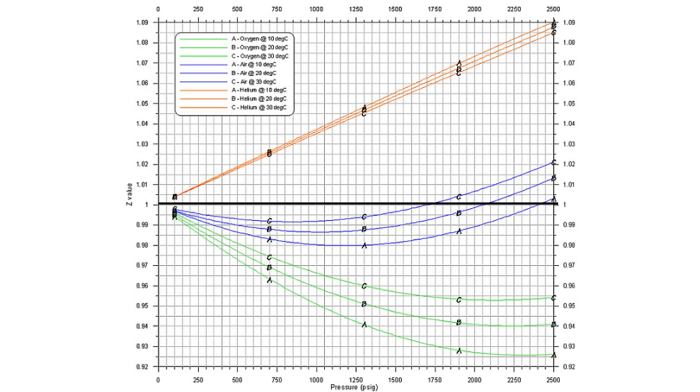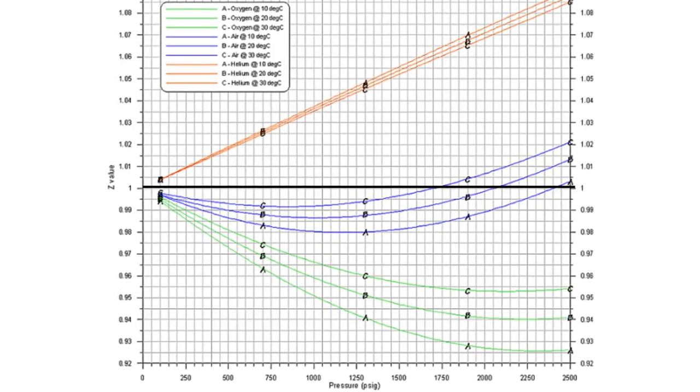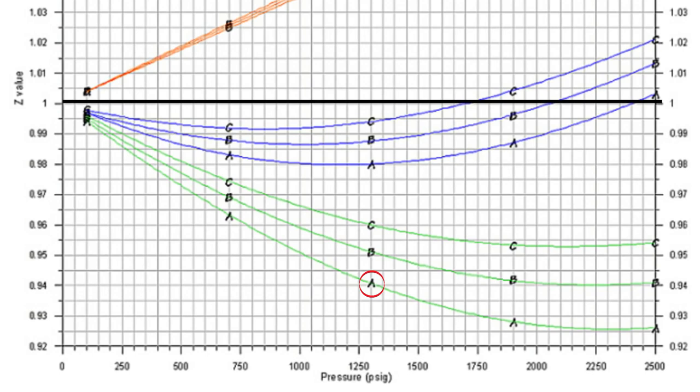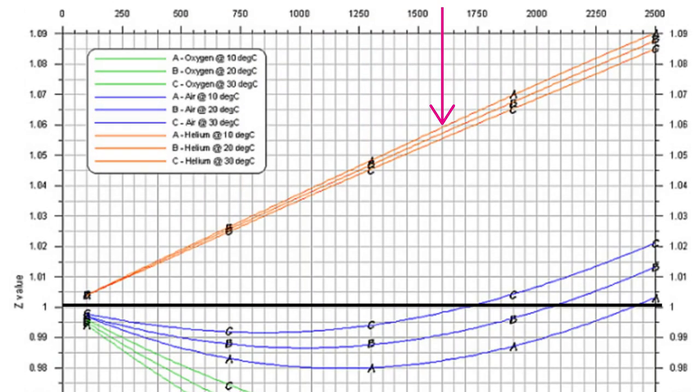Let's look at the ones for oxygen. As you can see in the legend, curve A was measured at 10 degrees Celsius, curve B was at 20 degrees, and curve C was at 30. Notice that as the temperature increases, the curve gets closer to the z equals 1 line. The same thing is true for all three of these gases. For example, the top helium curve is for 10 degrees, the middle is for 20, and the lowest curve is for 30 degrees Celsius.